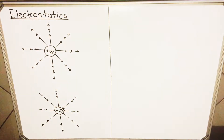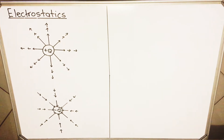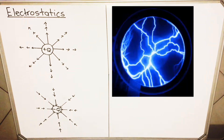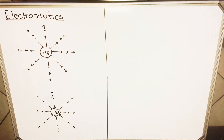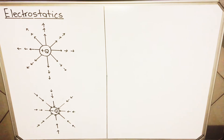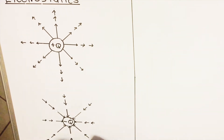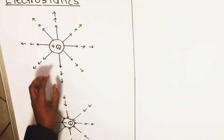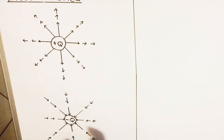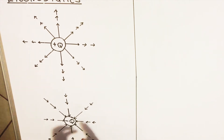Hello everyone, this is a lesson on electrostatics. It has two words: 'electro' from electricity, and 'static' from static, meaning not moving. With electrostatics, we have a charge that is not moving. With current electricity, the charge is moving.